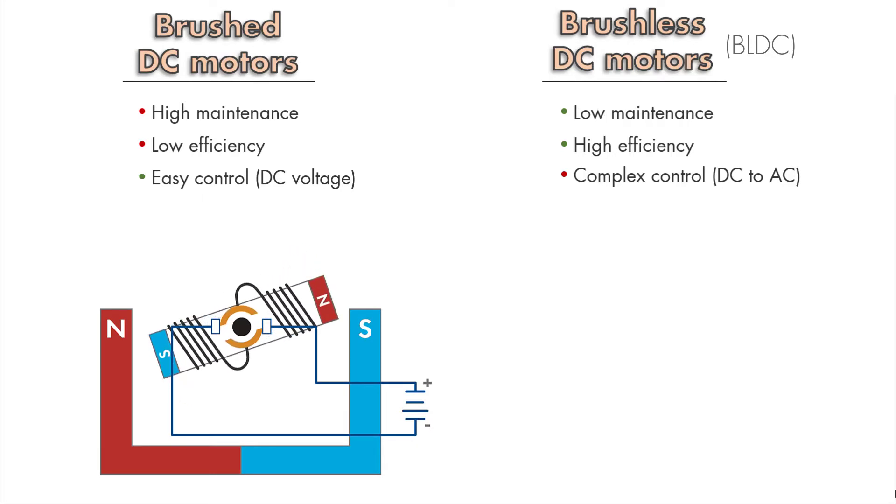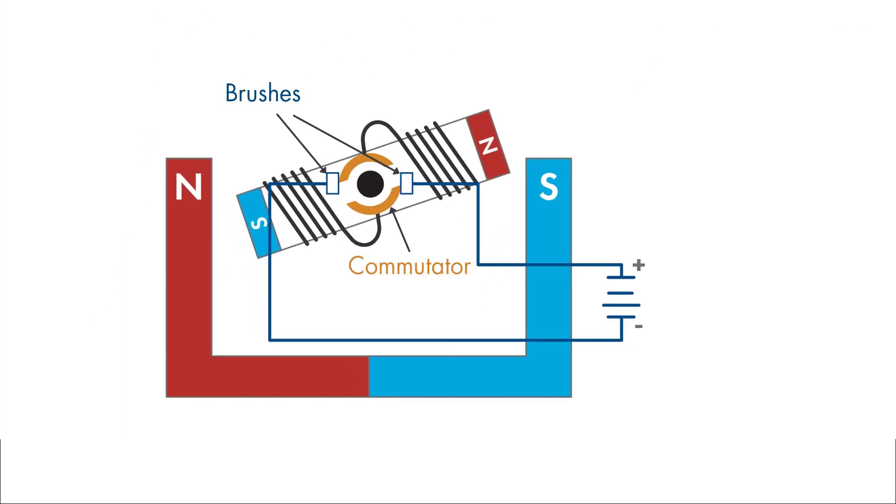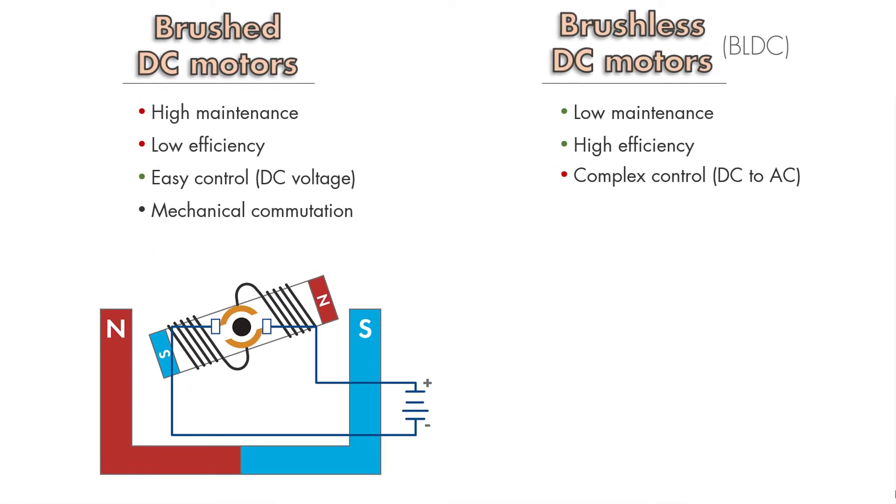This switching of phases is called commutation. In brushed motors, the commutation occurs mechanically where the brushes come in contact with the commutator of the rotor as the motor is spinning. Due to this physical contact, brushes wear out over time, affecting the motor performance.